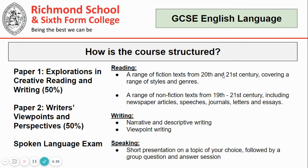Starting with English Language, the course is structured into two exams, both worth 50 percent. There's also a spoken language exam which makes up the qualification. In terms of reading, you'll cover a range of fiction texts from the 20th and 21st century across a range of styles and genres. You'll also read a wide range of non-fiction texts from the 19th century right up to the 21st century, including newspaper articles, speeches, journals, letters and essays.